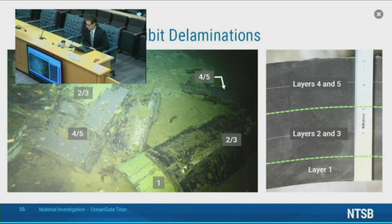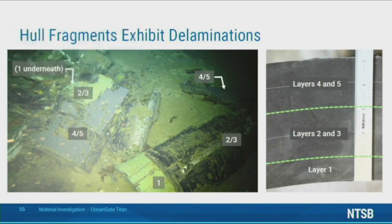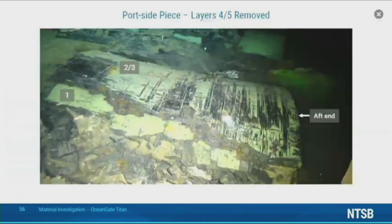This image shows these two pieces laying flat on the ocean floor during a recovery mission. Both pieces, and in fact much of the hull, had delaminated into multiple shells or layers. A cross section image on the right illustrates where these delaminations occurred. The first shell consisted solely of layer one. The second shell consisted of layers two and three, and finally the outermost shell consisted of layers four and five.